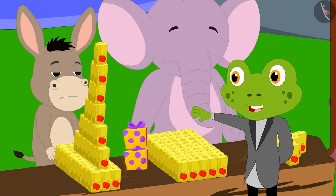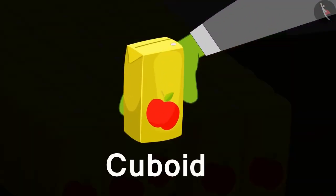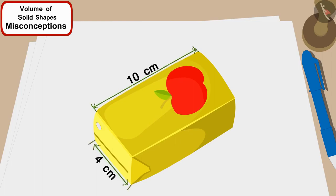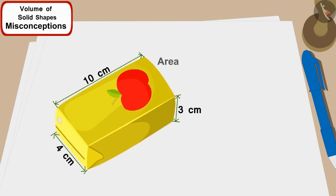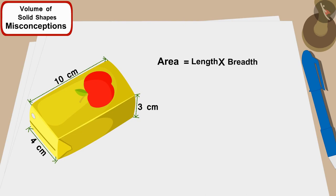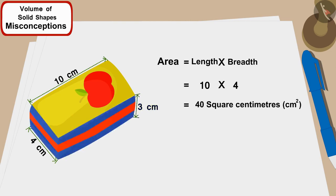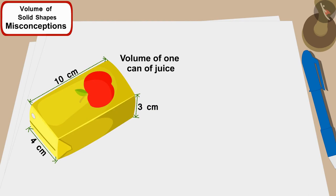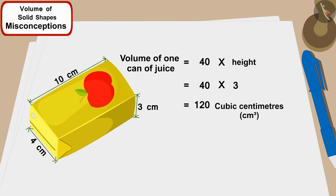Tarru explains: each juice box is cuboid shaped with length 10 cm, width 4 cm and height 3 cm. The bottom layer area is 10 times 4, equal to 40 cm². Because the height is 3 cm, there are 3 such layers. The volume of one juice carton is 40 multiplied by 3, that is 120 cm³.